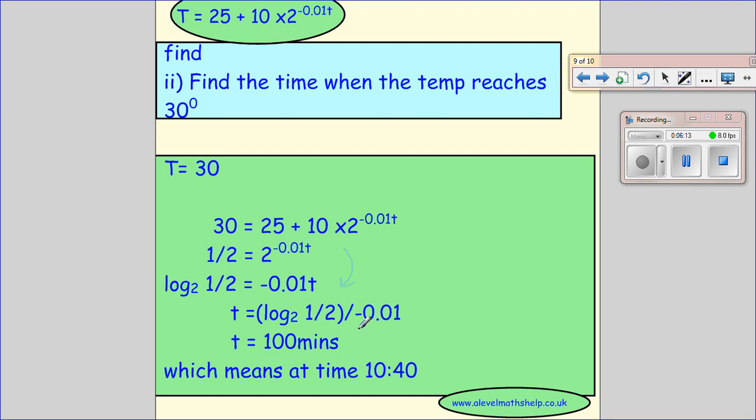And then we want to rearrange to get T. So we divide by 0.01. Now on your calculator, you should find there's a button which allows you to change the base. So you've got your standard log in base 10 and your log in base e. And there's one where you can choose the base. So you need to locate that on your calculator. Put it in your calculator and we get T equals 100 minutes. But we want the actual time. And so we knew the initial time was 9 o'clock. And so 100 minutes after 9 o'clock is 10:40.